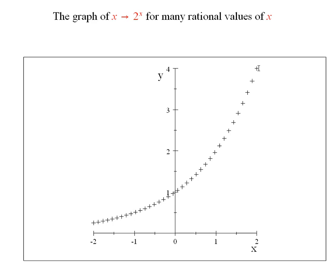What this is, is a plot of 2 to the x for a few values of x that are rational. And you can see that if you were to connect these up with a curve, you'd have something that would follow this outline of little x's or little crosses.